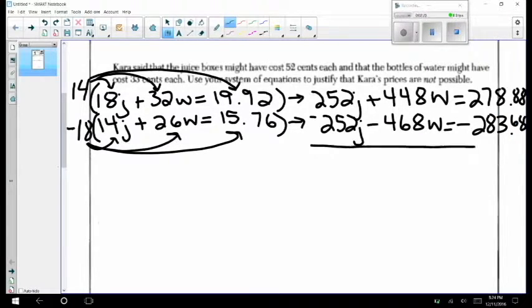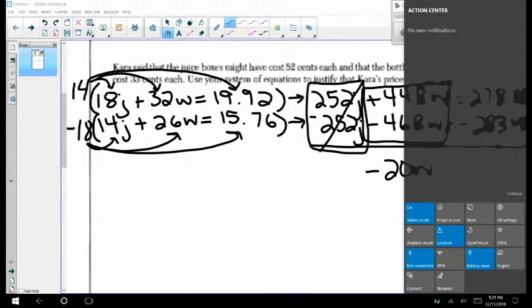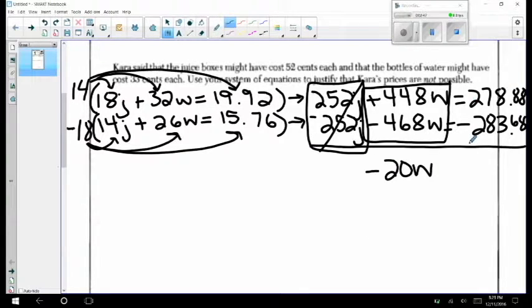Now we get to see the elimination method in action. When we combine like terms we see that our J terms will cancel or be eliminated. Let's combine our W terms and now let's combine our constants.